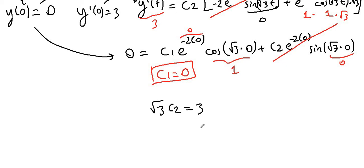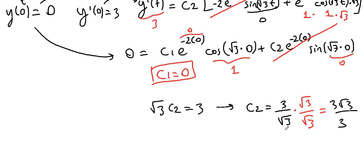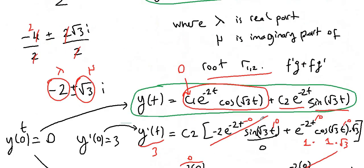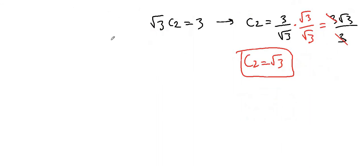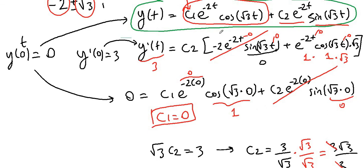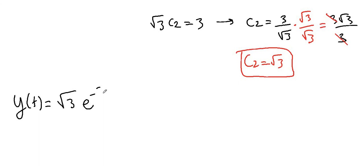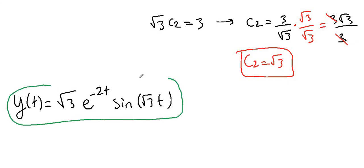So √3·c2 = 3, giving c2 = 3 over √3. Rationalizing by multiplying numerator and denominator by √3: we get 3√3 over 3, and the 3s cancel, so c2 = √3. Plugging c1 = 0 and c2 = √3 into the general formula, our final answer is y(t) = √3 · e to the negative 2t · sine(√3·t). Thank you.